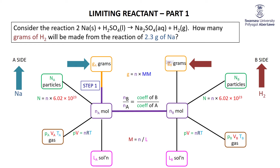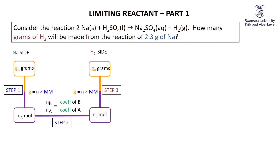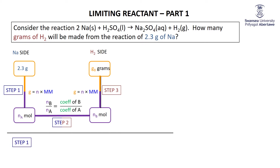Step one: grams to moles of sodium. Step two: moles of sodium to moles of H2. Step three: moles of H2 to grams of H2. Starting with 2.3 grams of Na — step one, divide by the molar mass of sodium, which is 23 — that gives us 0.1 moles of sodium.